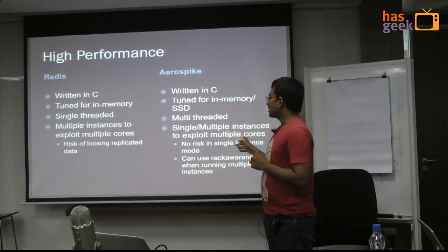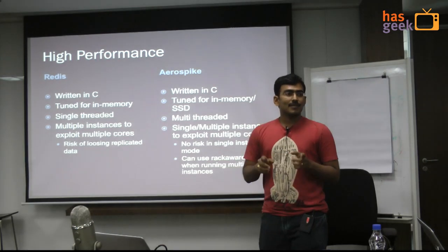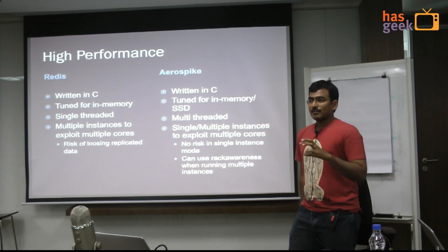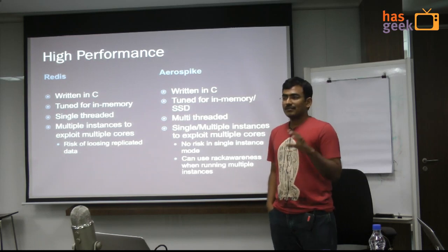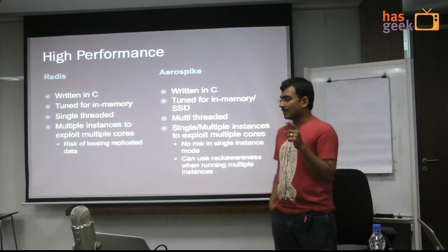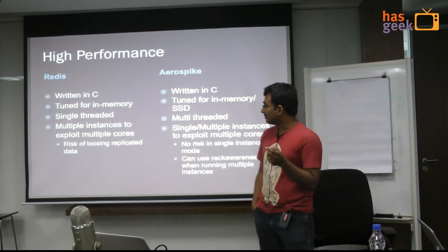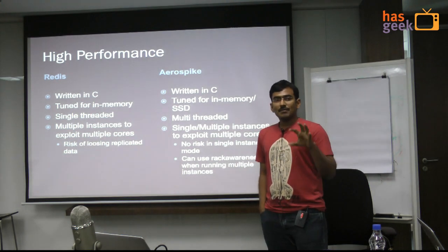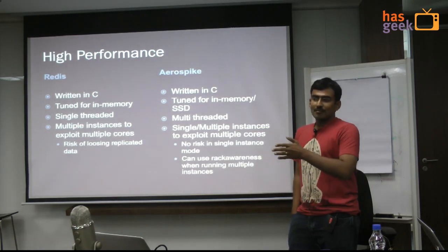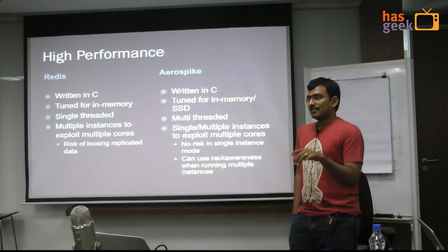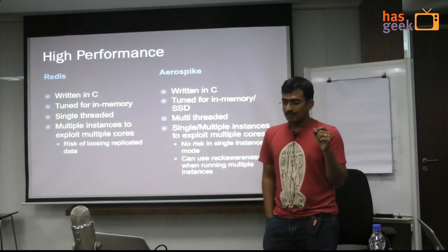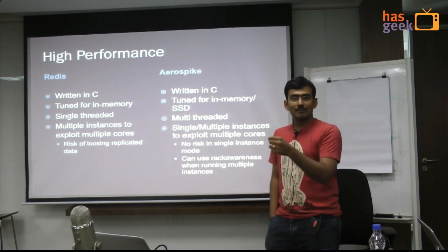Redis is single-threaded whereas Aerospike is multi-threaded. Don't think single-threaded is bad — it's actually very good in particular models because you don't need any locks. If multiple processes are getting blocked on locks, it can hurt your performance. VoltDB is also a single-threaded system and performs very well. However, single-threaded systems cannot easily exploit multiple cores, so you have to run multiple instances of Redis to exploit multiple cores on a machine. With Redis, you can bind each instance to separate cores and get full performance.